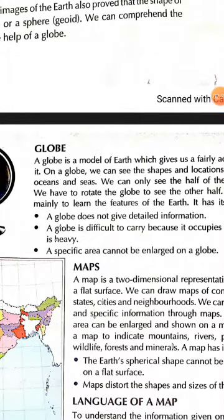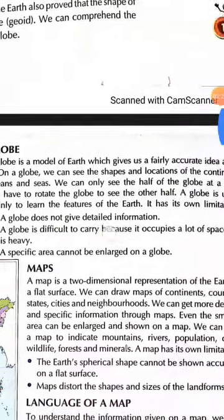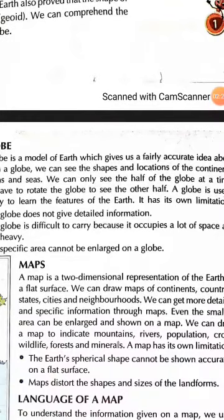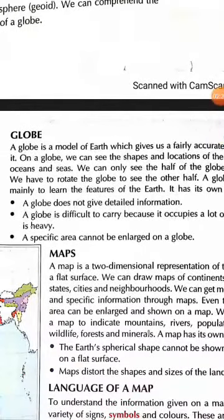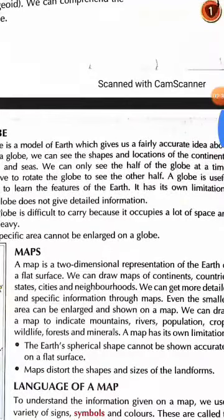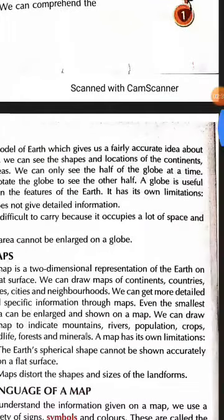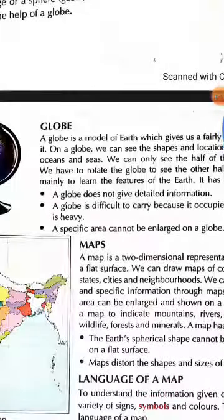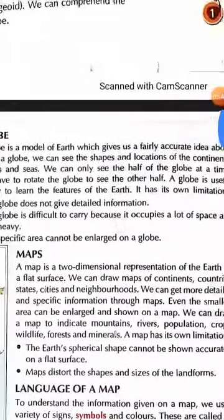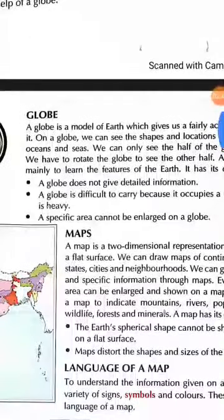We can see the shape and locations of the continents, seas and oceans. We can only see half of the globe at a time. We have to rotate the globe to see the other half. A globe is useful mainly to learn the features of the earth.